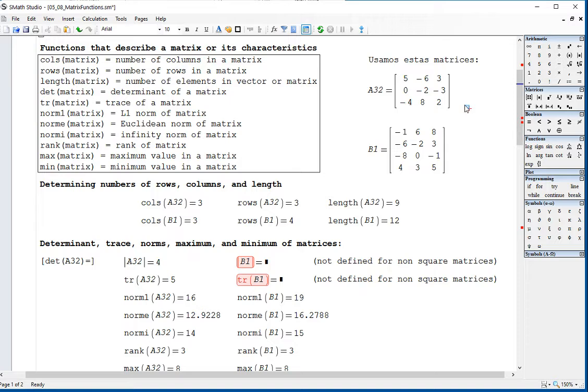And I'm using these two matrices, A32 and B1. A32 simply means three rows, two columns, and B1 simply means a three by two. I'm sorry, this is three rows, three columns.